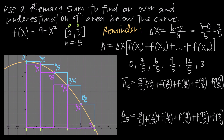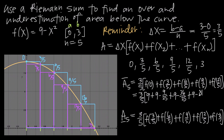Now we plug in the values. f of 0 gives 9 minus 0 equals 9. f of 3 fifths gives 9 minus 9 over 25. f of 6 over 5 gives 9 minus 36 over 25. f of 9 over 5 gives 9 minus 81 over 25. And f of 12 over 5 gives 9 minus 144 over 25. Multiplied by 3 fifths, if we do the math correctly, we get 513 over 25, which equals 20.52. That's our overestimation of area.